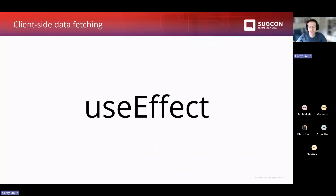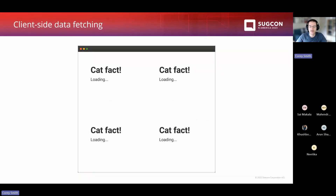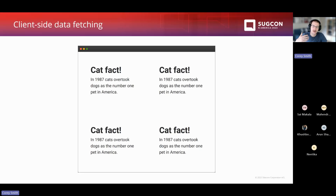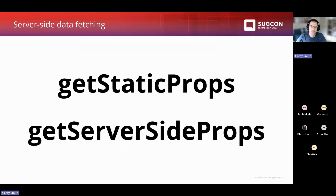The consequence of using the useEffect pattern is that you'll see a flash of content when your page loads — the user will see a loading message first, then the component refreshes once the API call finishes. This isn't the best user experience and can have negative impacts on SEO. The cool thing is Next.js has a solution for this at the page level in the form of two functions: getStaticProps — used for SSG (static site generation) — and getServerSideProps — used for SSR (server-side rendering).